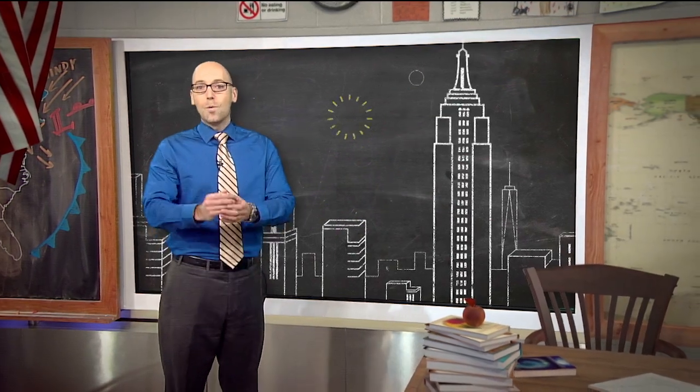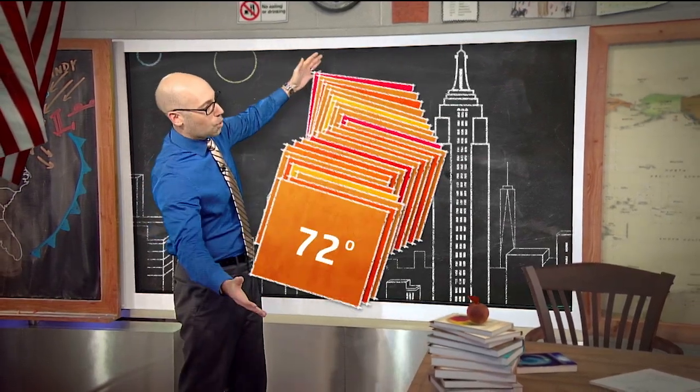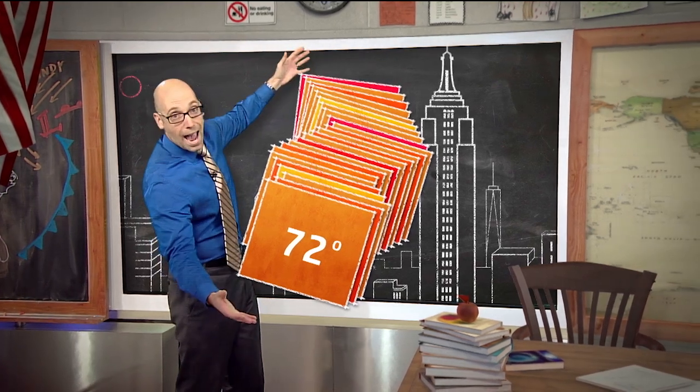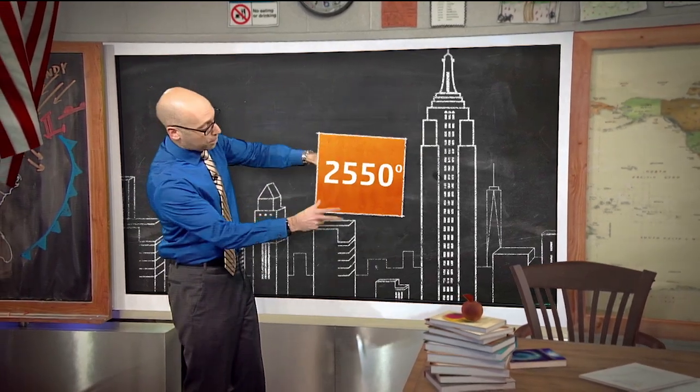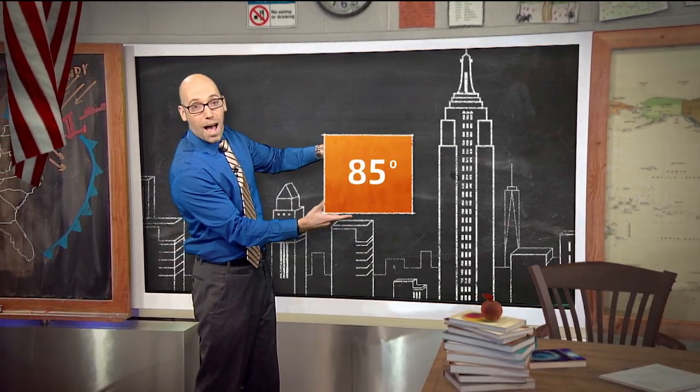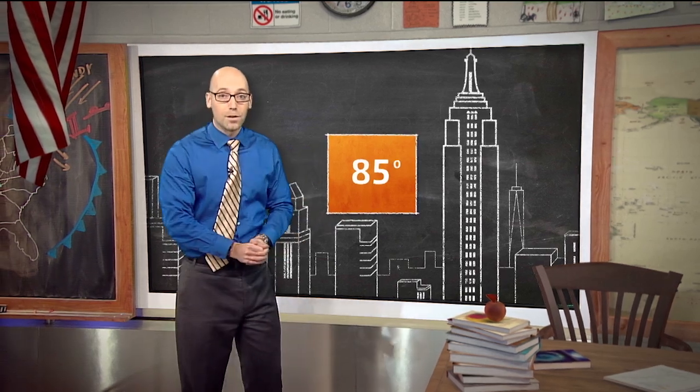we need to look at every high temperature over the past 30 years, add them all up, and divide by 30. 85 degrees is the climatological average high for this day in New York.